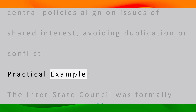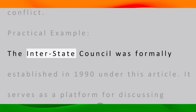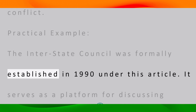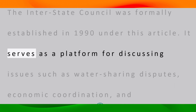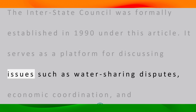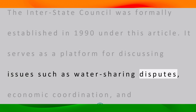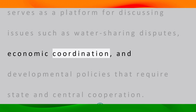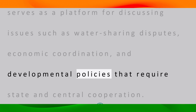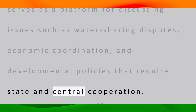The Interstate Council was formally established in 1990 under this article. It serves as a platform for discussing issues such as water-sharing disputes, economic coordination, and developmental policies that require state and central cooperation.